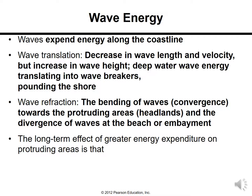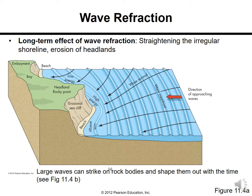Similar to other waves, sea waves get refracted and reflected. Wave refraction is the bending of waves — convergence towards protruding areas and divergence of waves at embayments. The long-term effect of greater energy expenditure on protruding areas is the creation of different landforms and the erosion of headlands, straightening the irregular shoreline. Large waves can strike rock bodies and shape them over time.